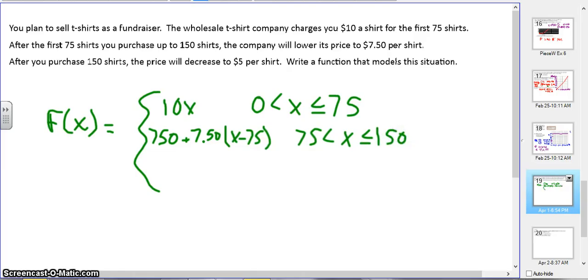So now, after I purchase all my 150 shirts, I'm going to pay $5 a shirt. So that means I have to plug 150 in to my stuff in equation. So 750 plus 7.50 times 150 minus 75. That's how much money I'm paying for my 150 shirts. So if I plug that in, I get $1,312.50.